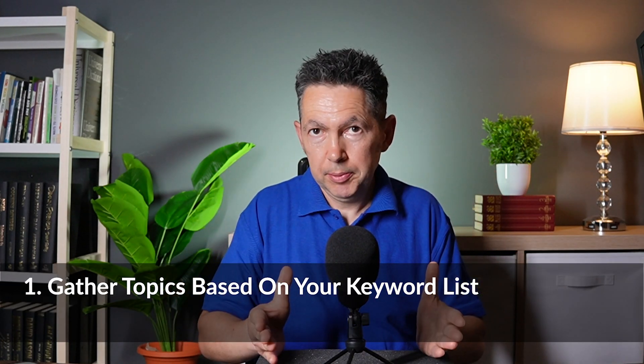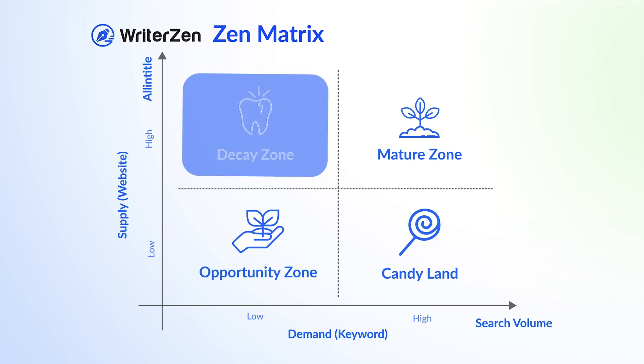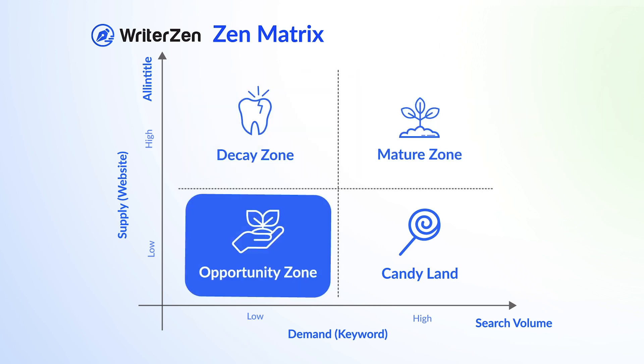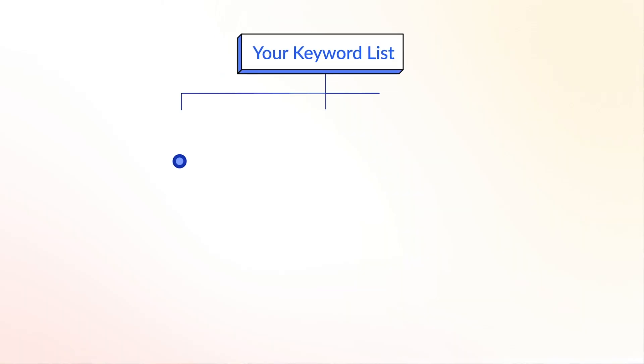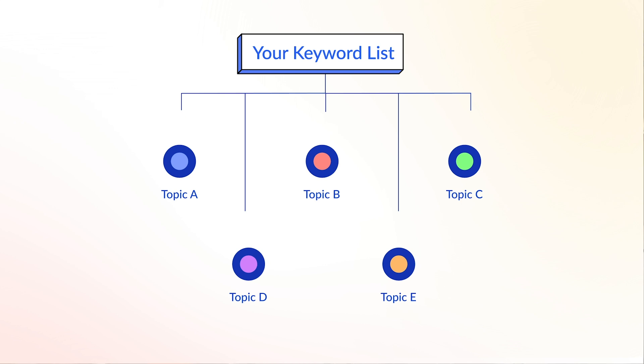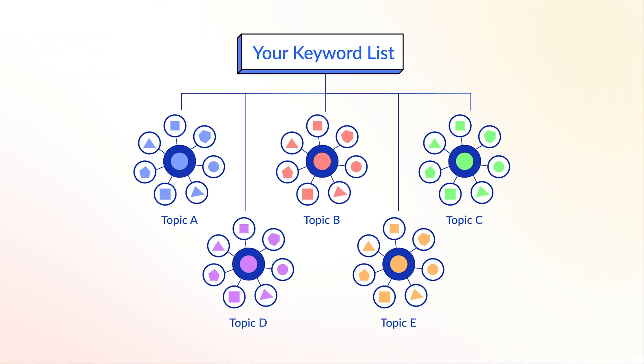How exactly do you cluster keywords? One option is to gather topics based on your keyword list. In lesson two, you learned how to categorize keywords during the research phase — for example, categorizing your keywords into the different zones of the Zen matrix and starting your SEO campaign with the opportunity keywords, or the Candyland zone if you found any. To create categories from your keyword lists, you group them into topics that match the user's search intent and your website structure. The very first step of keyword clustering is to gather related topics based on your keyword list.